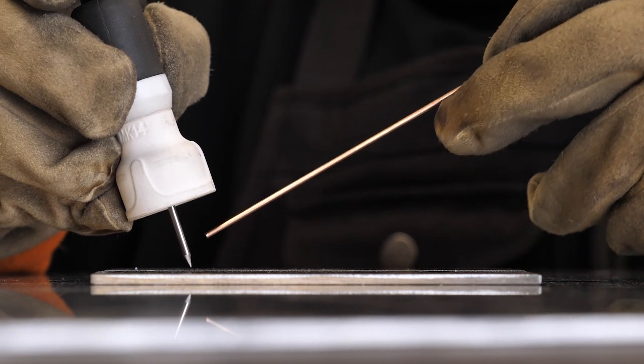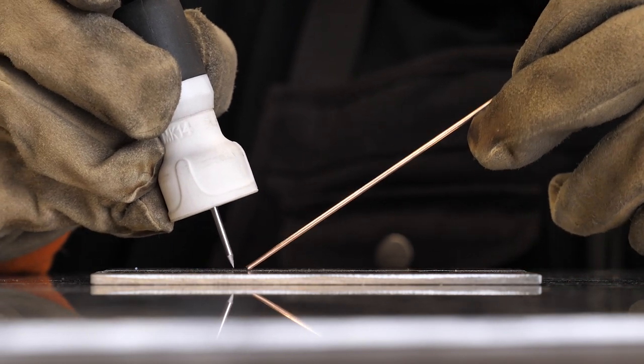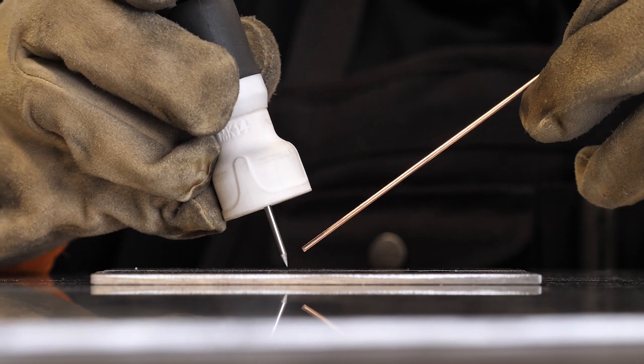Before striking an arc for the first time, we should first complete what's called a dry run. By moving through the motions in a dry run, we move the torch over the intended weld area without striking an arc.